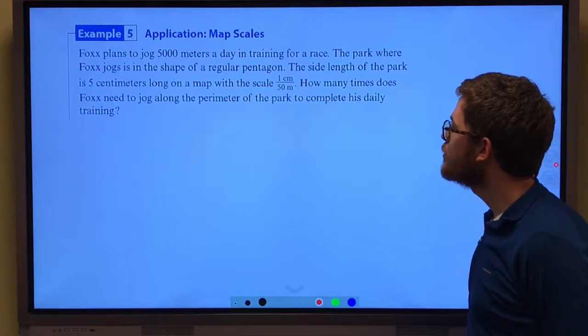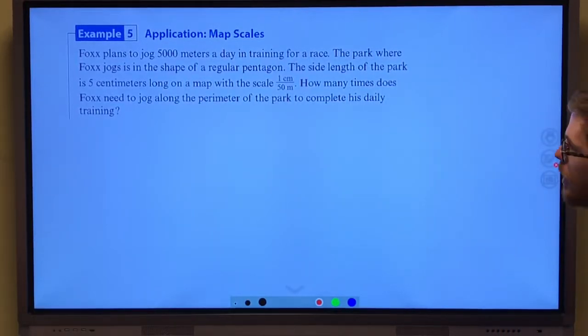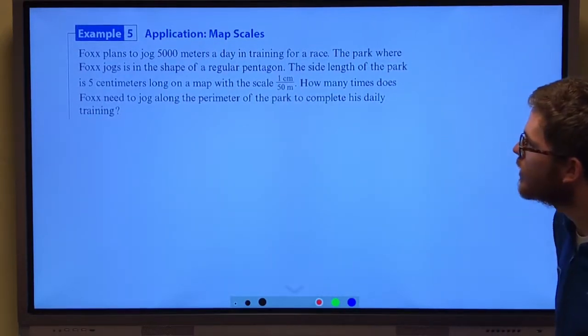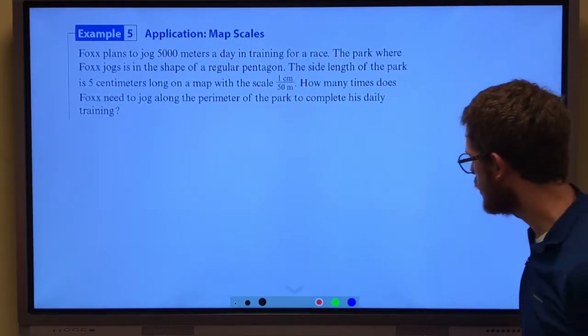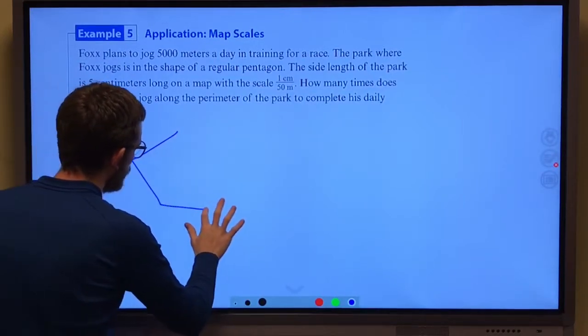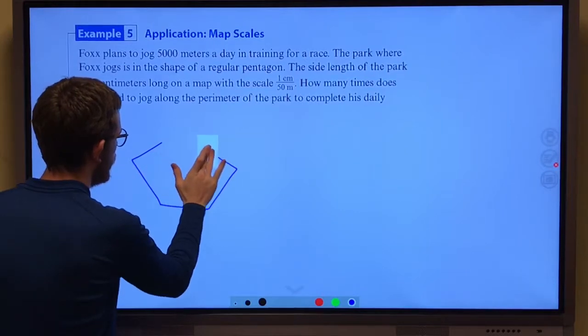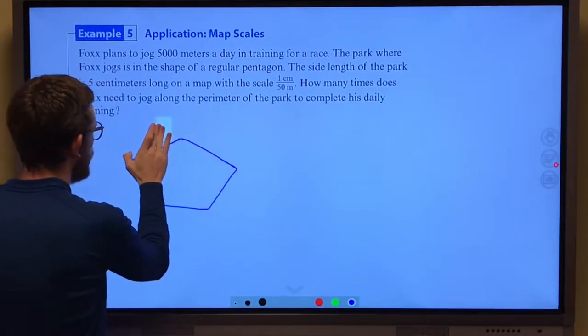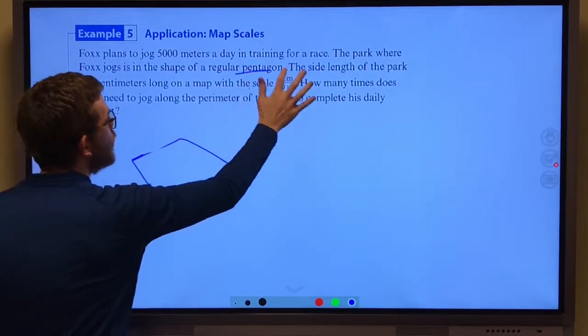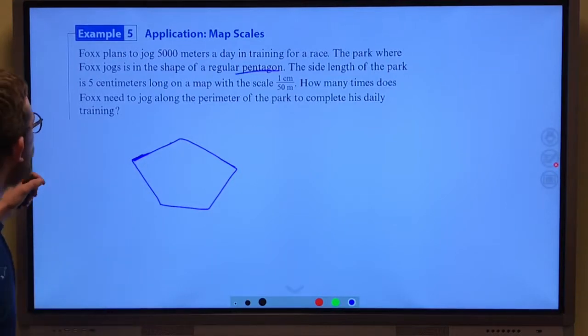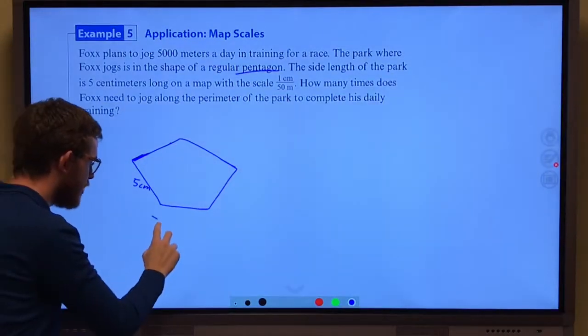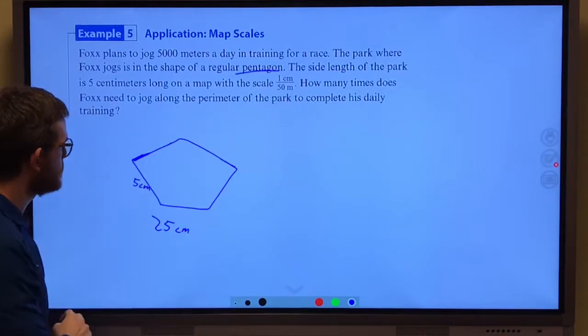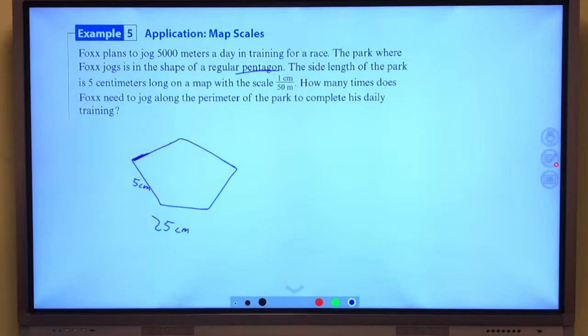Cool. All right. So it says Fox plans to jog 5,000 meters a day in training for a race. The park where Fox jogs is in the shape of a regular pentagon. The side length of the park is 5 centimeters long on a map with a scale of 1 centimeter is 50 meters. How many times does Fox need to jog around the perimeter of the park to complete his daily training? All right. So here's our park. Regular pentagon, right? All the sides are the same. And the side length of the park is 5 centimeters on the map. That means a total perimeter of 25 centimeters.